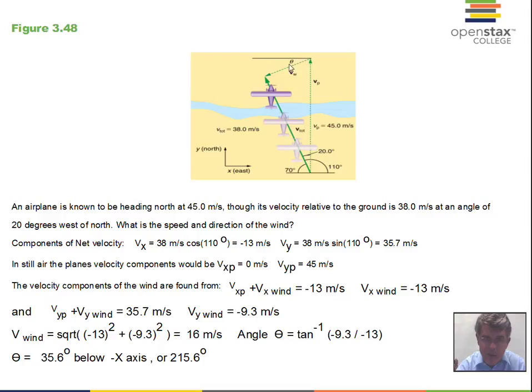Theta is the angle below the negative x-axis. Inside the triangle, theta is 35.6 degrees. From the positive x-axis to the negative x-axis is 180 degrees. Adding 180 degrees plus the 35.6 degrees below the x-axis gives 215.6 degrees from the positive x-axis. That's the mathematical answer.